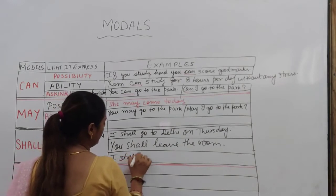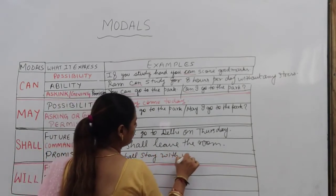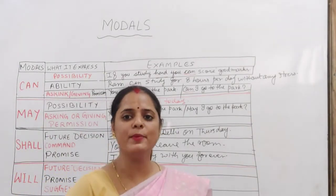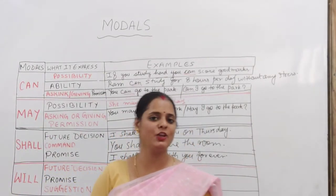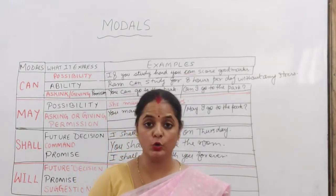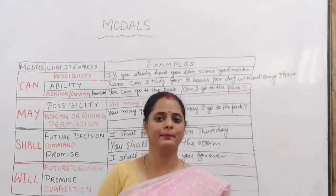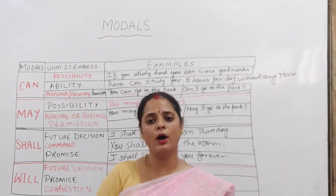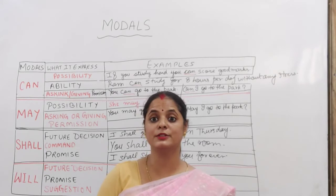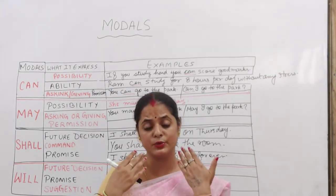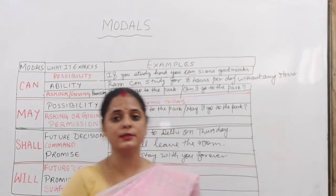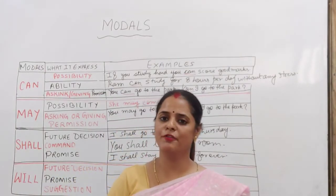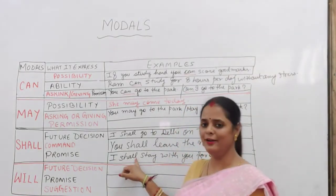For promise using 'shall': 'I shall stay with you forever.' This is a promise — the promise your parents make to you, or that you make to your parents. If anybody — your mother, father, grandparents — wants to give you a promise, they will say: 'I shall stay beside you forever and ever.' Here also we are using 'shall' but in a different manner.